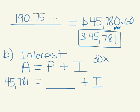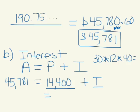So we deposited $30 every single month for 40 years. So we put in $14,400. So to find our amount of interest, we need to take the $45,781 and subtract $14,400 from it. So our amount of interest is $31,381.